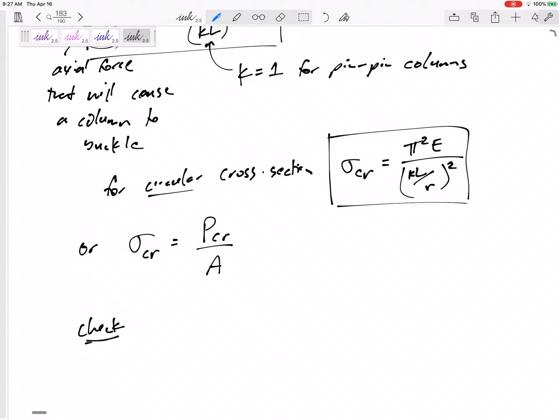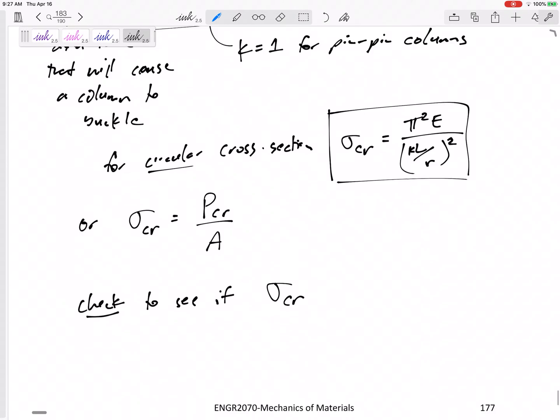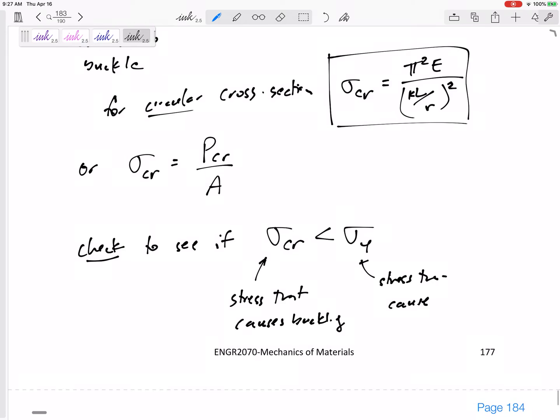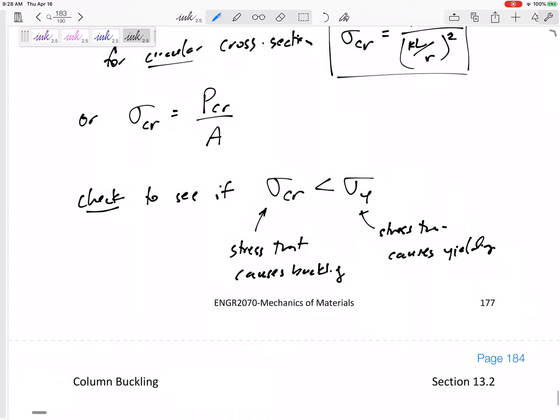So, we need to check to see if the critical stress, the stress that causes buckling is less than the stress that causes yielding to see which one happens first. And so, to maybe kind of guard against, we've been looking at yield stress. We've been making sure it doesn't fail due to yielding. We also need to make sure it doesn't fail due to buckling, because it could fail due to buckling under a much smaller stress. Or you could fail there first.